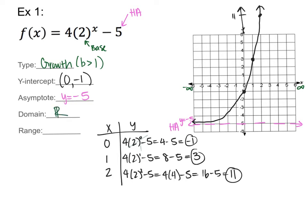For the range, the curve goes upward with an arrow to positive infinity, but as it goes downward it flattens out because it can't pass y = −5. So the range goes from −5 to positive infinity. We use parentheses for −5 because it's a horizontal asymptote and can't be touched — just like infinity, we use parentheses for both.